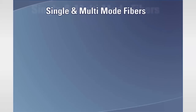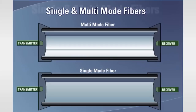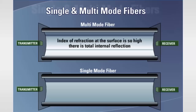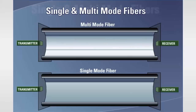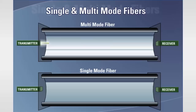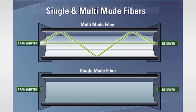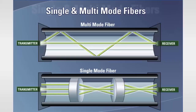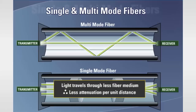There are two types of fiber optic cable in use today: multimode and single-mode fiber optic cable. Multimode fiber is constructed such that, for a given wavelength of light, the index of refraction at the surface is so high that there is total internal reflection — the fiber optic cable acts like a tube whose interior surface is polished like a mirror. Some of the light will travel straight down the tube, while some will reflect off the walls as it travels along. Single-mode fiber's construction is such that it acts as an elongated lens continuously focusing the light into the center of the fiber. Light traveling through single-mode fiber travels through far less fiber medium, resulting in far less attenuation per unit distance than light traveling through a multimode fiber.